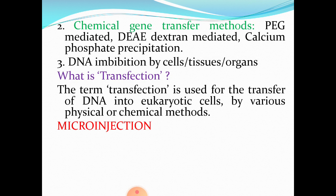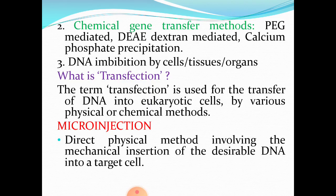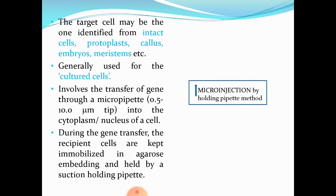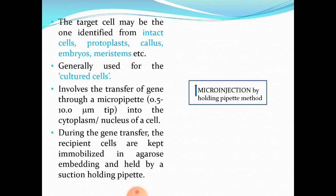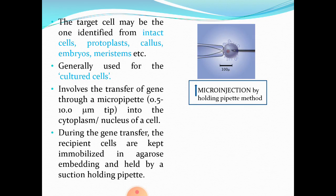Let us study microinjection. This is a direct physical method involving the mechanical insertion of desirable DNA into a target cell. The target cell may be intact cells, protoplasts, callus, embryos, or meristems. Normally, microinjection is employed for cultured cells.